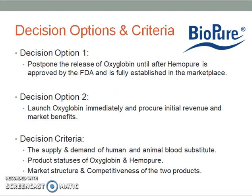There are two decision options indicated within the case study. The first option was to postpone the release of Oxyglobin until after Humapure was approved by the FDA and fully established in the marketplace. This was supported by the Vice President for Human Clinical Trials, Ted Jacobs, since introducing a lower-priced Oxyglobin would cause an impractical price expectation for Humapure.